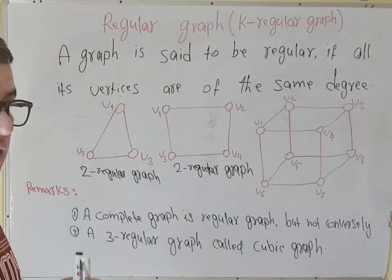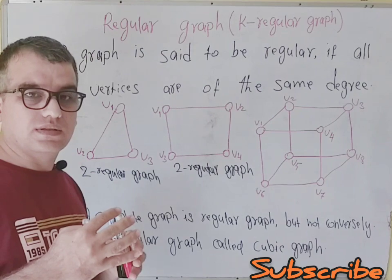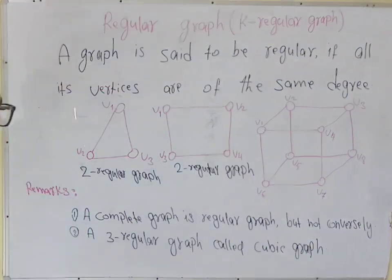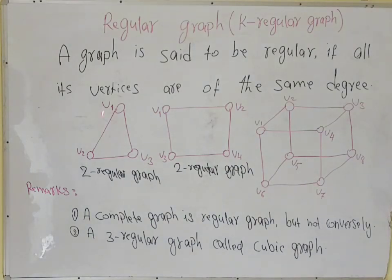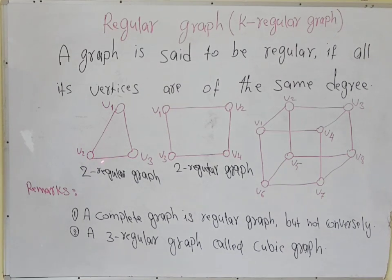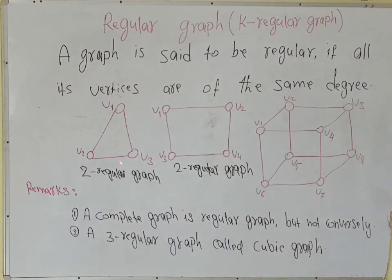A graph is regular if all its vertices have the same degree. Look at this graph. In this graph, vertex number one has degree two. Vertex number two also has degree two, and vertex number three is also degree two. So this graph is called a regular graph.